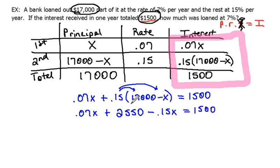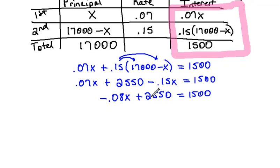We can combine these like terms. Point oh seven and negative point one five would be negative point oh eight X plus twenty five fifty equals fifteen hundred. Now we could subtract twenty five fifty from both sides to get negative point oh eight X equals negative ten fifty. The fifteen hundred minus the twenty five fifty would be negative ten fifty.